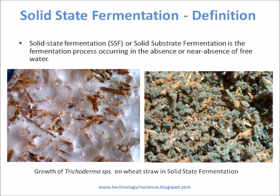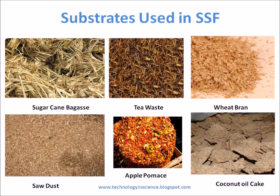Substrates used in Solid State Fermentation: Solid Substrate Fermentation employs natural raw materials as a carbon source, such as cassava, barley, wheat bran, rice bran, sugarcane bagasse, cassava bagasse, and various oil cakes.